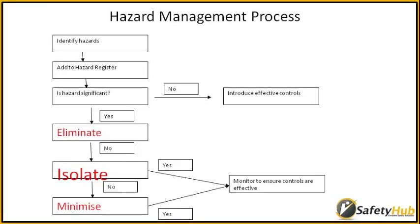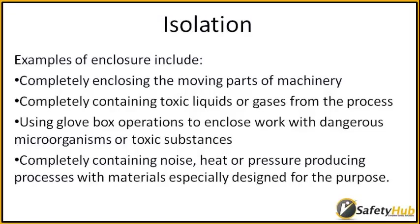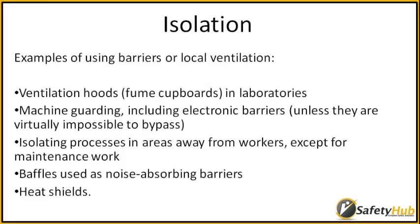Isolation. The hazard still exists but the workers can't come into contact with it. The two major methods are enclosure or using barriers. If you can pause the video and have a read. The other example is of using barriers or local ventilation. Machine guarding is a classic example of isolation.